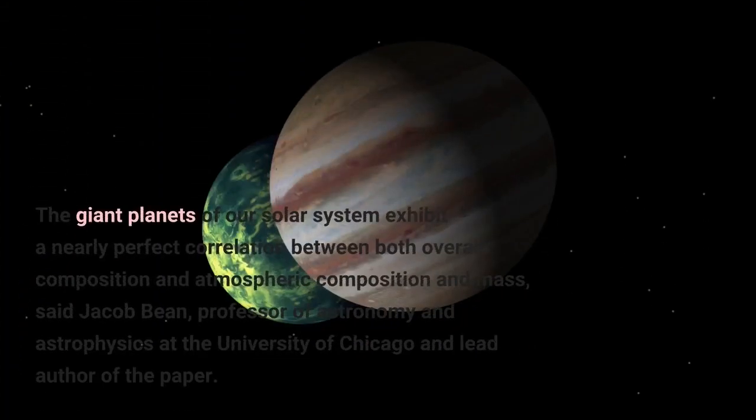The giant planets of our solar system exhibit a nearly perfect correlation between both overall composition and atmospheric composition and mass, said Jacob Bean, professor of astronomy and astrophysics at the University of Chicago and lead author of the paper.